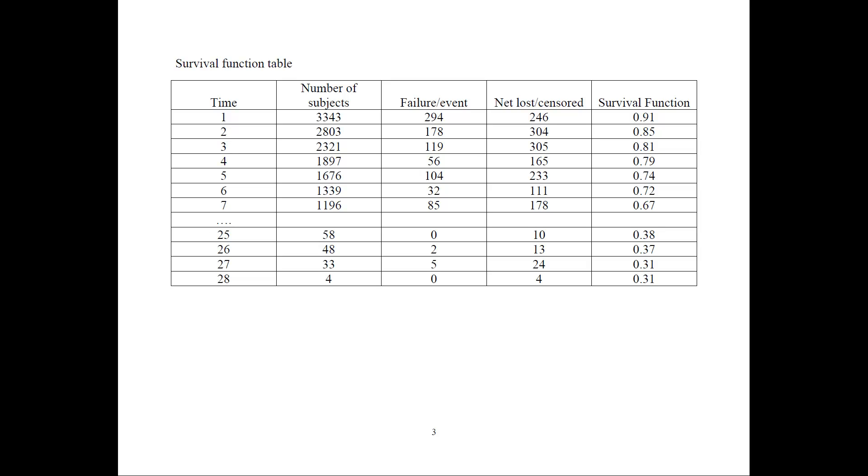So what would be the survival function? The hazard rate would be how many have failed divided by the total number at risk. So the survival function would be 1 minus these failure rates, divided by the number of subjects, or 0.91.